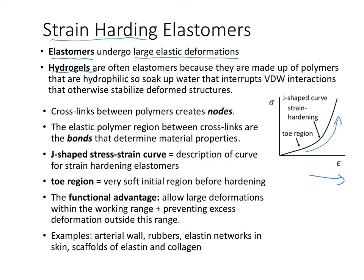Crosslinks in these materials between the polymers create nodes. Without the crosslinks, it would basically be a very viscous fluid. The elastic polymer region between crosslinks — anywhere we have a polymer between the crosslinks — makes up the bonds that determine the material properties. We'll spend much of this lecture talking about the properties of those elastic bonds.